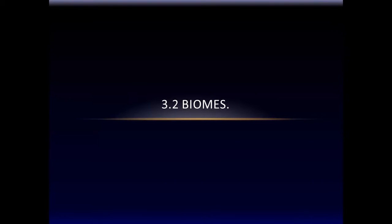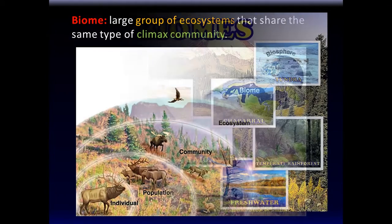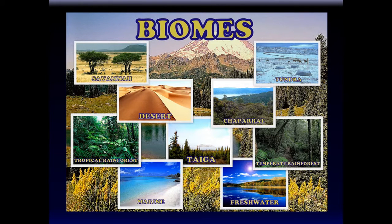Today we'll talk about biomes — a brief and superficial study, but we have to start somewhere. A biome is a large group of ecosystems that share the same type of climax communities. In other words, climax communities that look similar are huddled together across a certain geographic area, and combining all these ecosystems with the same climax community in the same geographic area is called a biome.